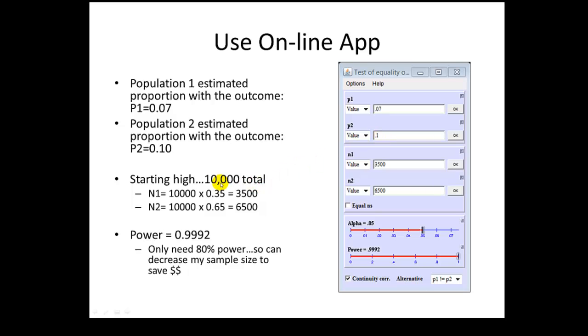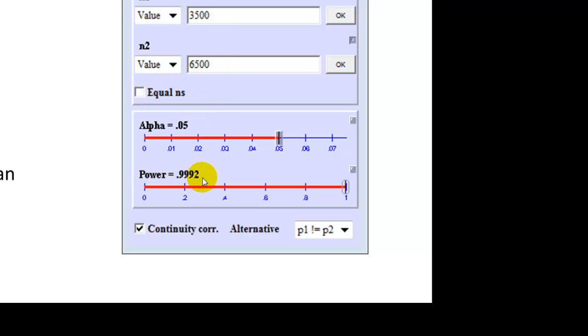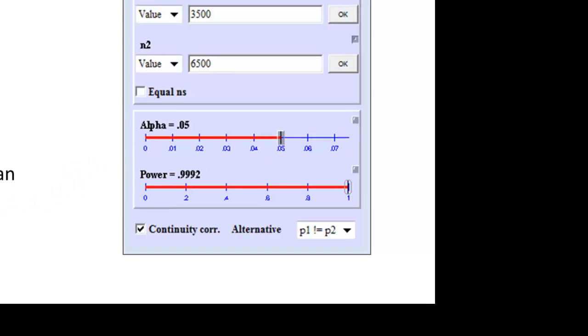Then, what to put in N1? I just start with a big number, I guess, and say 10,000 people. I found an earlier estimate that 35% of the population at Olmstead were regular consumers of chocolate. I used 0.35 times 10,000 to estimate N1 to be 3,500 and put that over here. That leaves a difference of 6,500 left to be in N2. Notice I have already unchecked equal ends here, otherwise these numbers would pop back and forth to match each other. When I hit enter after that, up pops a power of 0.9992. I only need to have 80% power. This is higher than I need to have. So, I can decrease my sample size and try to get a smaller sized study that's more reasonable to conduct.